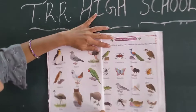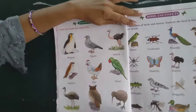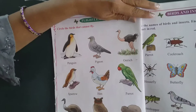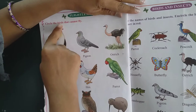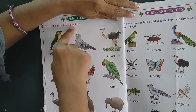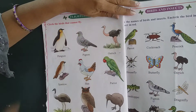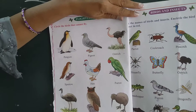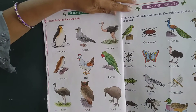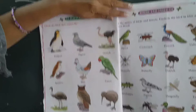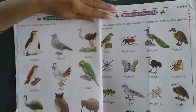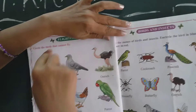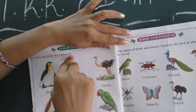Look at here. Look at the book first. Page number 68. Circle the bird that cannot fly. What we have to do? We have to circle the bird which cannot fly.